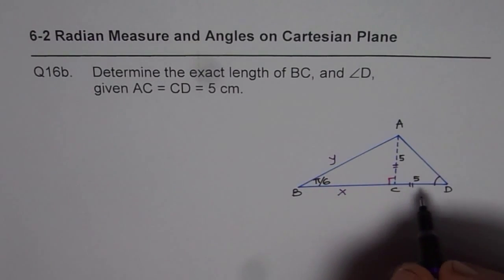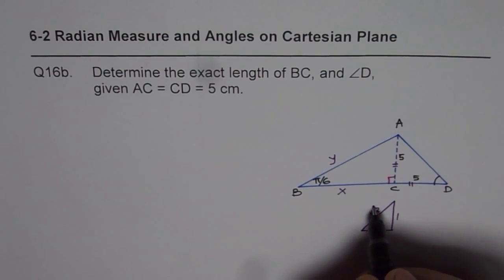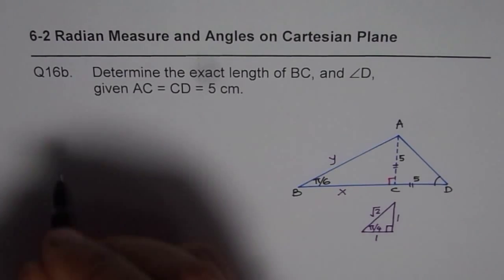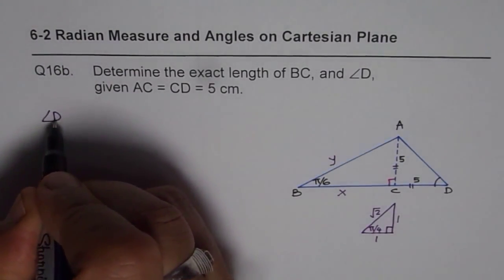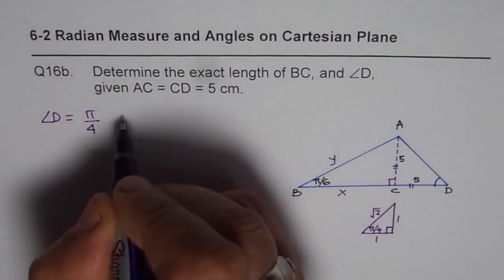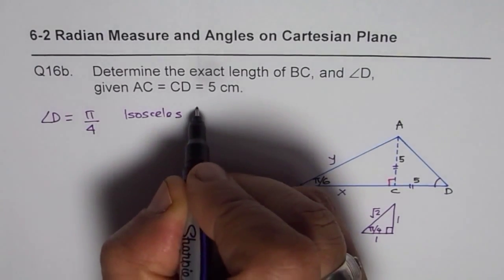So we have isosceles triangle. So this is our special triangle, which is, you can draw like this, 1, 1, square root of 2, right? So in this special triangle, you know, if it is an isosceles, the other two have to be pi by 4 each. So we know angle D is equal to pi by 4, since it is an isosceles right triangle.